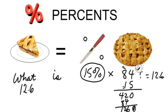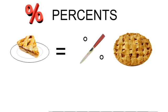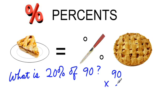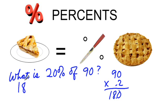Let's take another example. What is 20% of 90? The slice of pie equals the knife times the pie. 90 times 0.2. We don't need to write the trailing zero. 2 times 0 is 0, 2 times 9 is 18. And so 18 is 20% of 90.